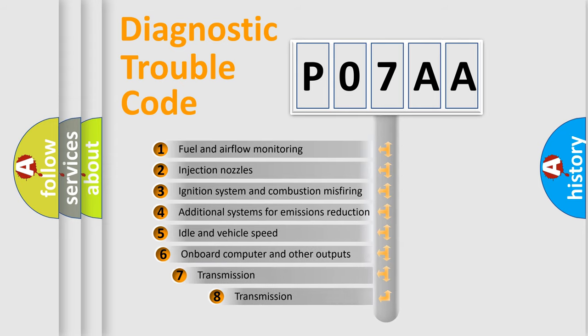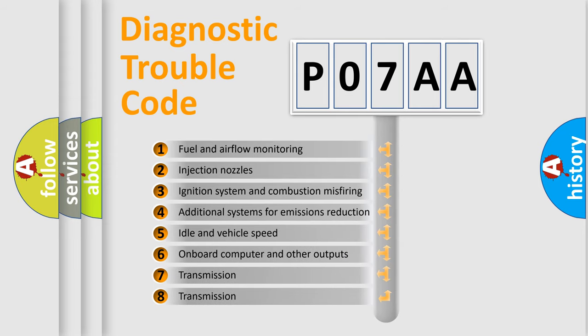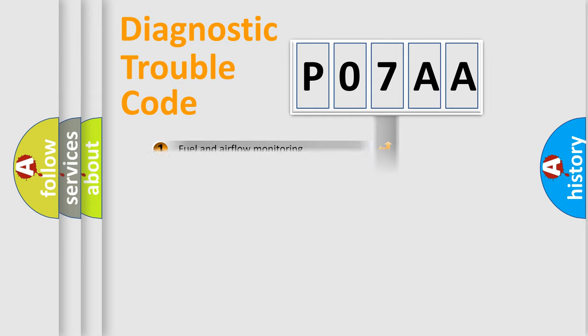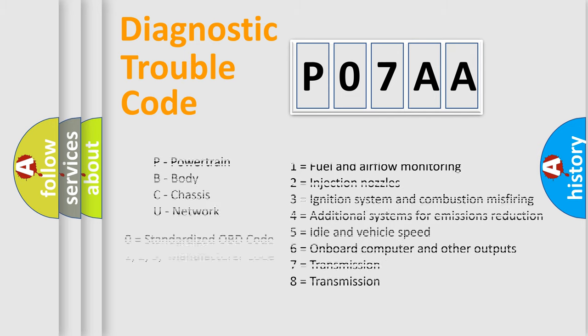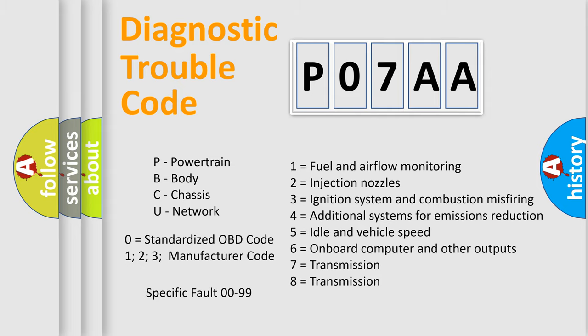The third character specifies a subset of errors. The distribution shown is valid only for the standardized DTC code. Only the last two characters define the specific fault of the group. Let's not forget that such a division is valid only if the second character code is expressed by the number zero.